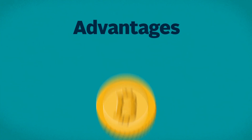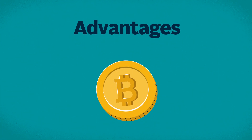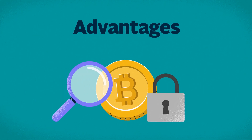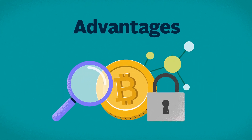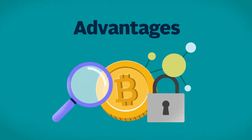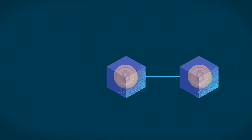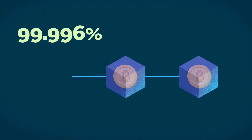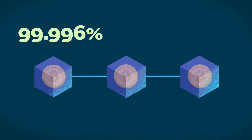Advantages: Taking Bitcoin as an example, users can enjoy its highly secure, transparent, and decentralized network with a 99.986% uptime when transacting on-chain.